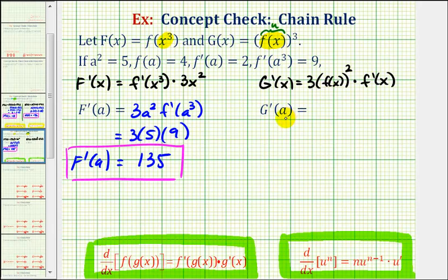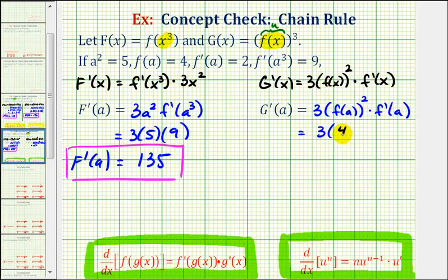So to find big G prime of A, we'll substitute A for X: three times F of A raised to the second power times F prime of A. F of A is equal to positive four, so we'd have three times four squared times F prime of A, which is equal to positive two. Four squared is equal to sixteen, so three times sixteen is forty-eight, times two is equal to ninety-six.